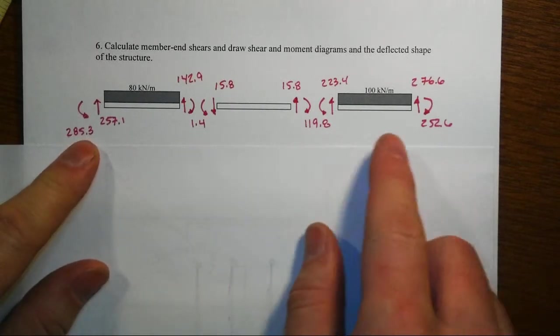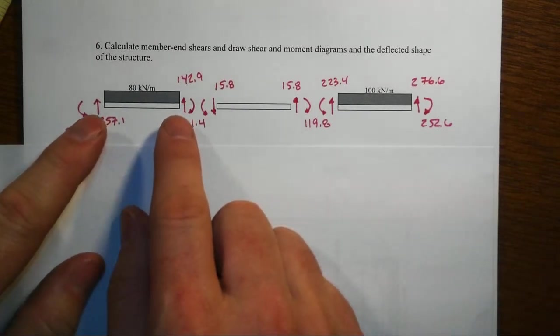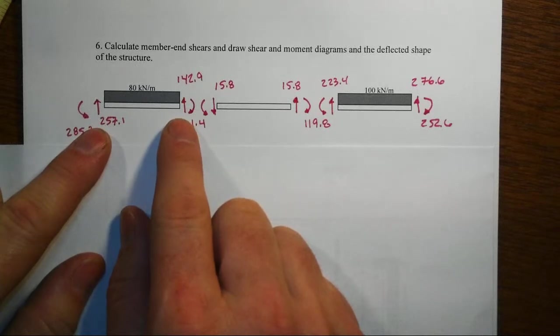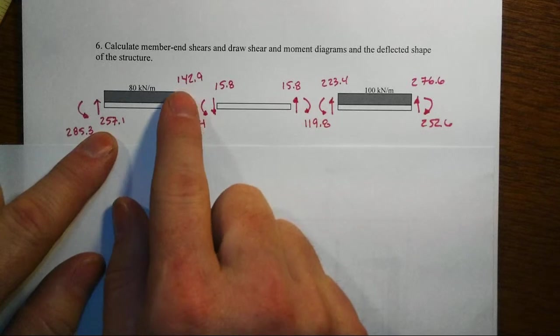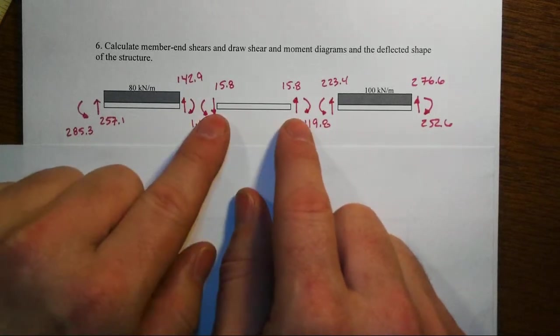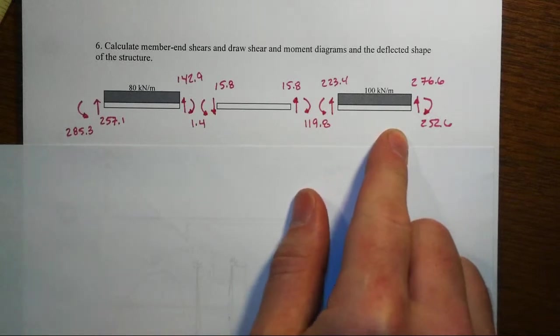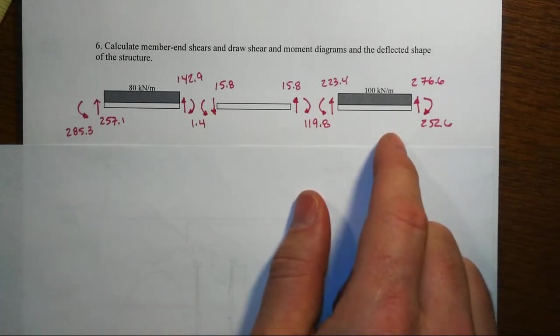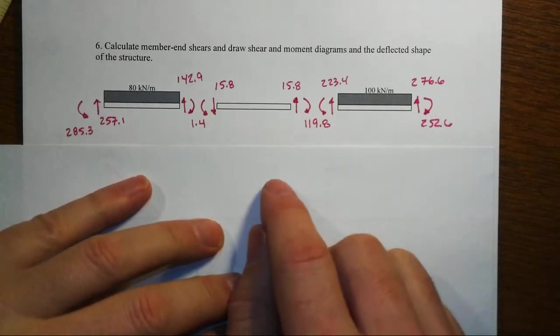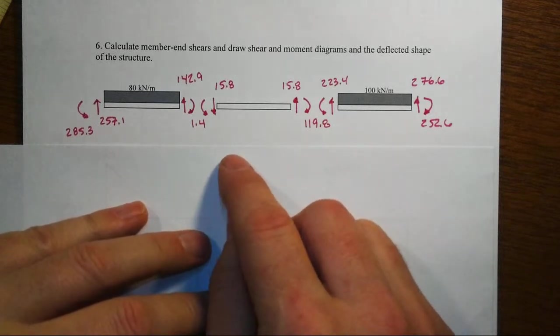Once we have those moments, we can just use basic equilibrium, summing moments about either end to find the various shear values. We do that in each and every situation, and that's going to enable us to draw shear moment diagrams and then eventually the deflected shape and do some post-analysis.